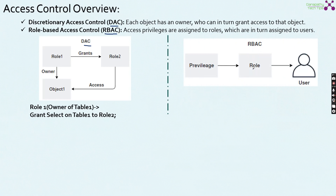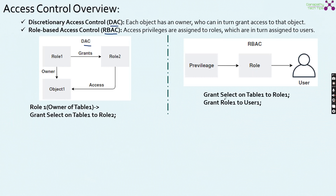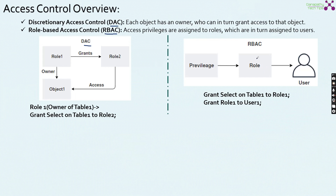Moving on to RBAC, which is the role-based access control. Here the privileges are granted to a role, then the roles will be granted to users. To understand this, see the SQL statement: grant select on table 1 to role 1, and then grant role 1 to user 1. What is the major difference here? In DAC, the owner is directly granting the access; in RBAC, the privileges are granted via roles alone. This has a lot of advantages — you can group users into one specific role and then grant access to that role alone, instead of granting each and every access to individual users.